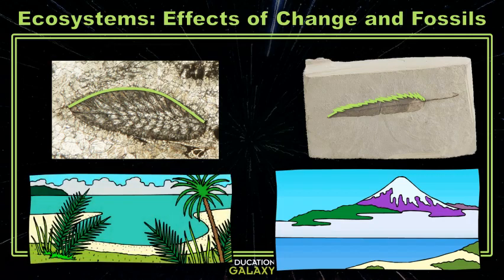A lot of times warm areas have fewer fossils because the warm climate encourages dead organisms to break down and decay faster and better. But sometimes a big event like the flooding of a river will provide an area with a lot of fossils.